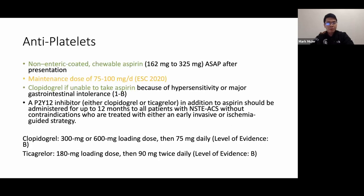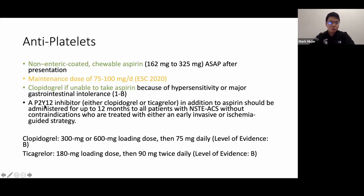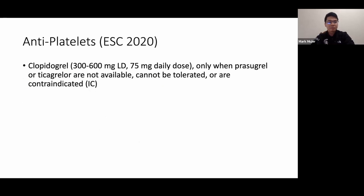For antiplatelets, give non-enteric-coated chewable aspirin as a loading dose of 162 to 325 mg immediately at presentation. Studies show low-dose aspirin at 81 mg daily provides the same ischemic benefits as high-dose with lower bleeding risk. If the patient cannot take aspirin due to hypersensitivity or GI intolerance, consider clopidogrel. Give a P2Y12 inhibitor for up to 12 months in patients treated with either early invasive or ischemia-guided strategy.